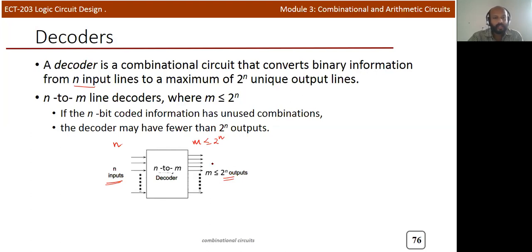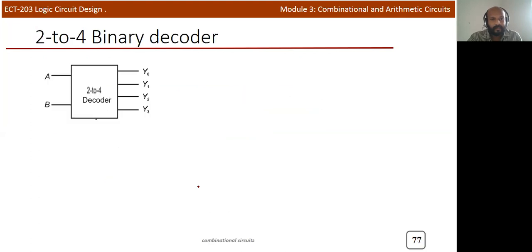Unlike the multiplexer, there are no select lines in the case of a decoder — only inputs and outputs. In the case of a mux, there will be select lines, but not for a decoder.